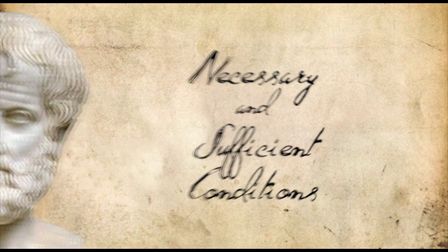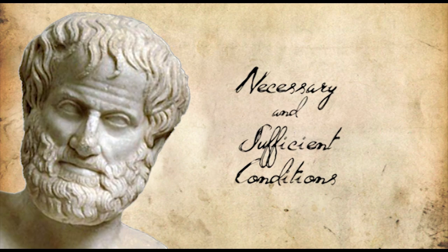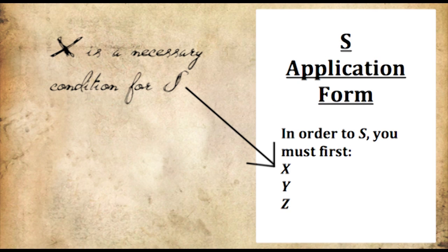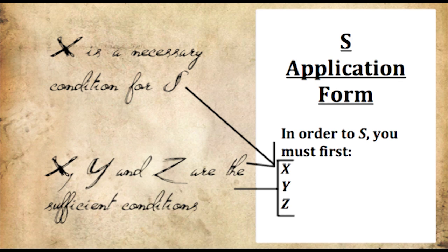In philosophy, we often chat about necessary and sufficient conditions. Imagine an event, S. A necessary condition is something that has to occur for S to happen. A sufficient condition is all that has to occur for S to happen.